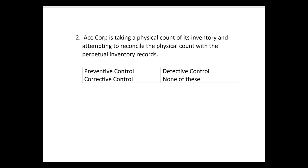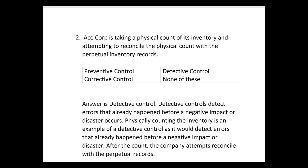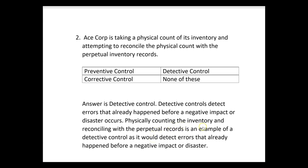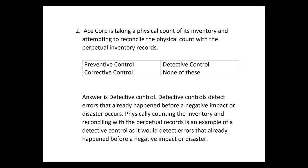Number two: Ace Corp is taking a physical count of its inventory and attempting to reconcile the physical count with the perpetual inventory records — is this a preventive, detective, or corrective control, or none? The answer is detective. Reconciliations are detective controls. They detect errors that already happened before a negative impact or disaster occurs. Physically counting inventory and reconciling with perpetual records would detect that something was wrong if the counts didn't match. Just know for the exam: reconciliations are examples of detective controls.